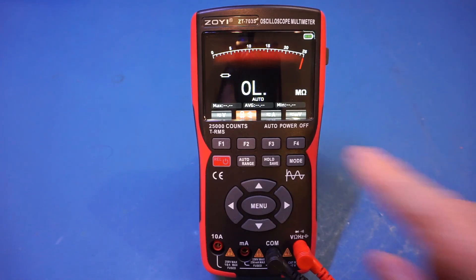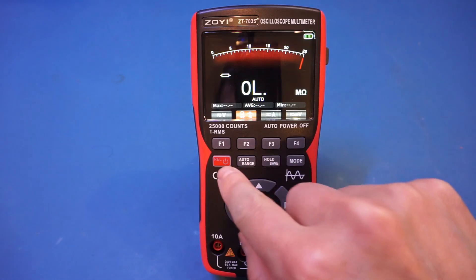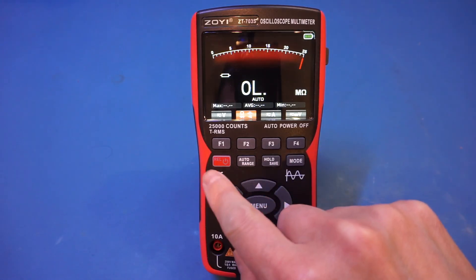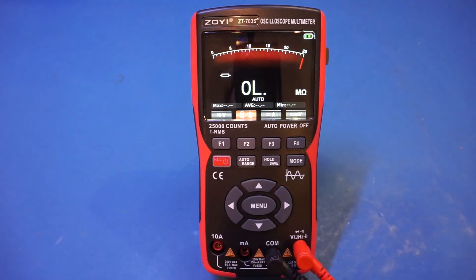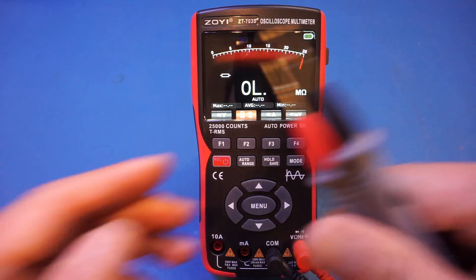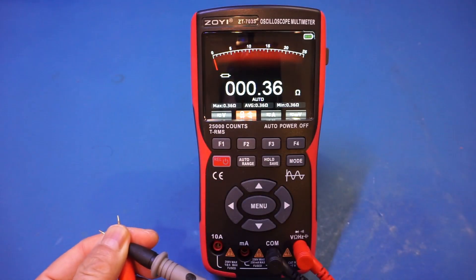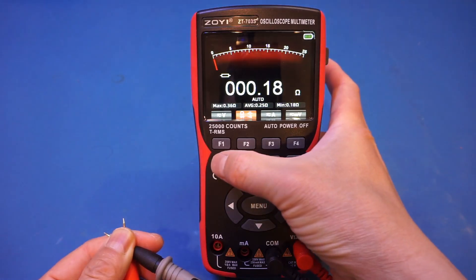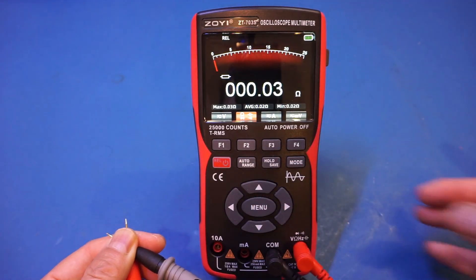But if I were designing the meter, I would probably put it on a different button, because it's just not very obvious from this red background, and it's not lit up. So you can't really see the labeling that well. Anyway, let me quickly demonstrate here. So let me short out the leads. And let's press the rail button. Yep, no issues.